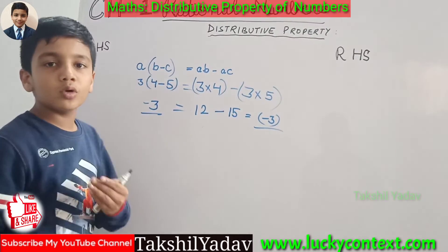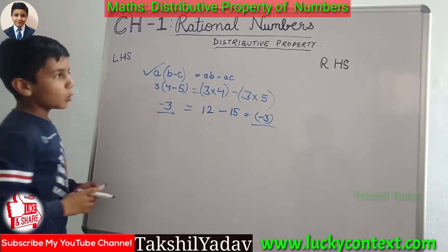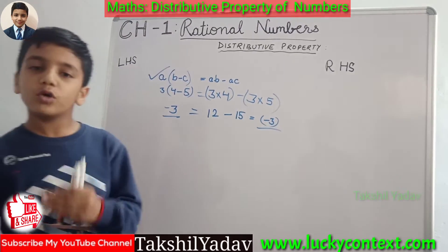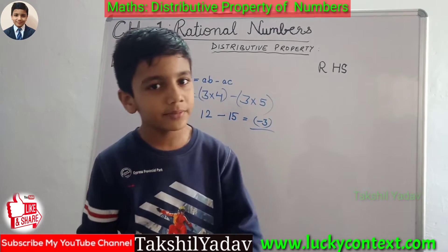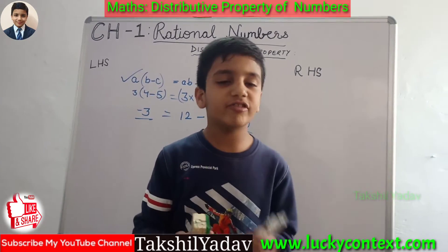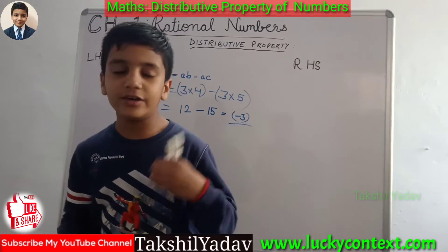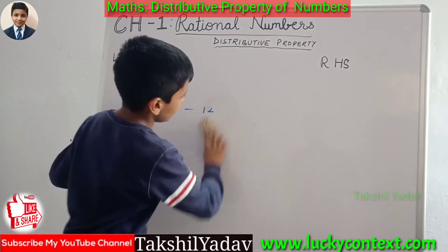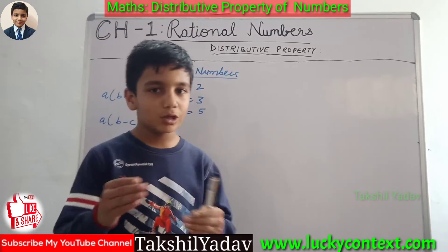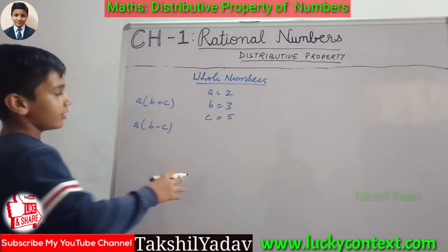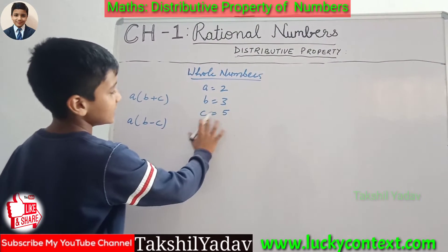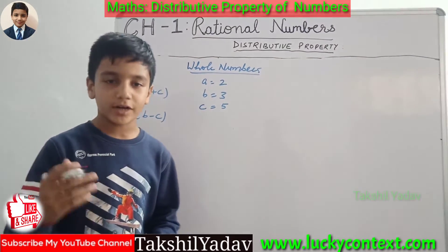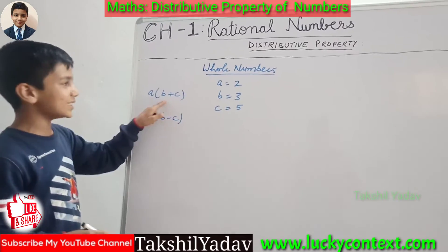On the RHS, we have 12 minus 15, which is also equal to minus 3. Hence we compute that both sides are equal and this formula is also correct. Now we will discuss this property for four types of numbers: whole numbers, integers, natural numbers, and rational numbers. For whole numbers, I take the value of A as 2, B as 3 and C as 5. For the distributive property of multiplication over addition, these are the values and this is the formula.